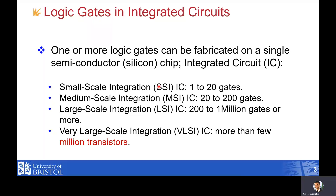Integrated circuits can be roughly categorized into four categories. SSI, which stands for small scale integration, means 1 to 20 gates. Anything above 20 up to 200 gates is called MSI, which stands for medium scale integration. Then we have large scale integration, or LSI, which involves anything from 200 up to a million gates or even more.